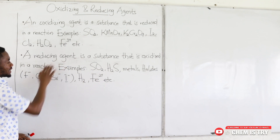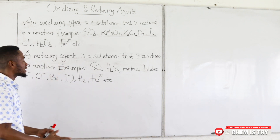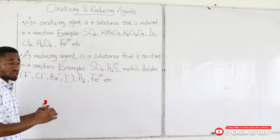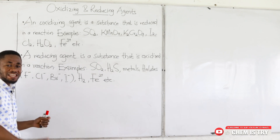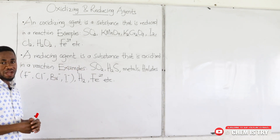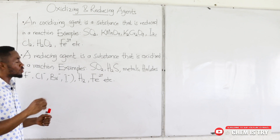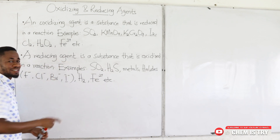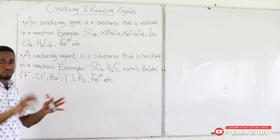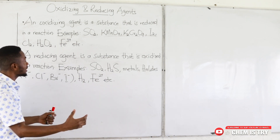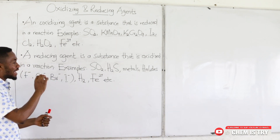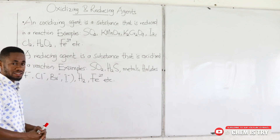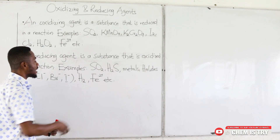A reducing agent is a substance that is oxidized in a reaction. If you look at a redox reaction and see a substance whose oxidation number is increasing in the course of the reaction, that substance is undergoing oxidation and is called a reducing agent. It's a swap: the substance undergoing reduction is the oxidizing agent, and the substance undergoing oxidation is the reducing agent.